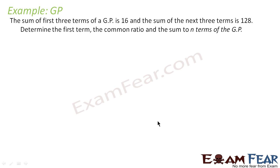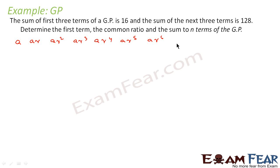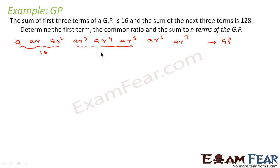Let's solve one more question. It says: the sum of the first three terms of a GP is 16 and the sum of the next three terms is 128. Determine the first term, common ratio, and sum of n terms. Let's take six terms of the GP: a, ar, ar², ar³, ar⁴, ar⁵.